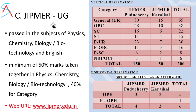For JIPMER UG entrance exams, forms are out in the last week of March, the exam is generally conducted in the first week of June, and results are out in the second or third week of June. Previously there was only one JIPMER in Puducherry, but now there are two — JIPMER Puducherry with 150 seats and JIPMER Karaikal with 50 seats, making 200 seats overall. For more details log on to jipmer.edu.in.